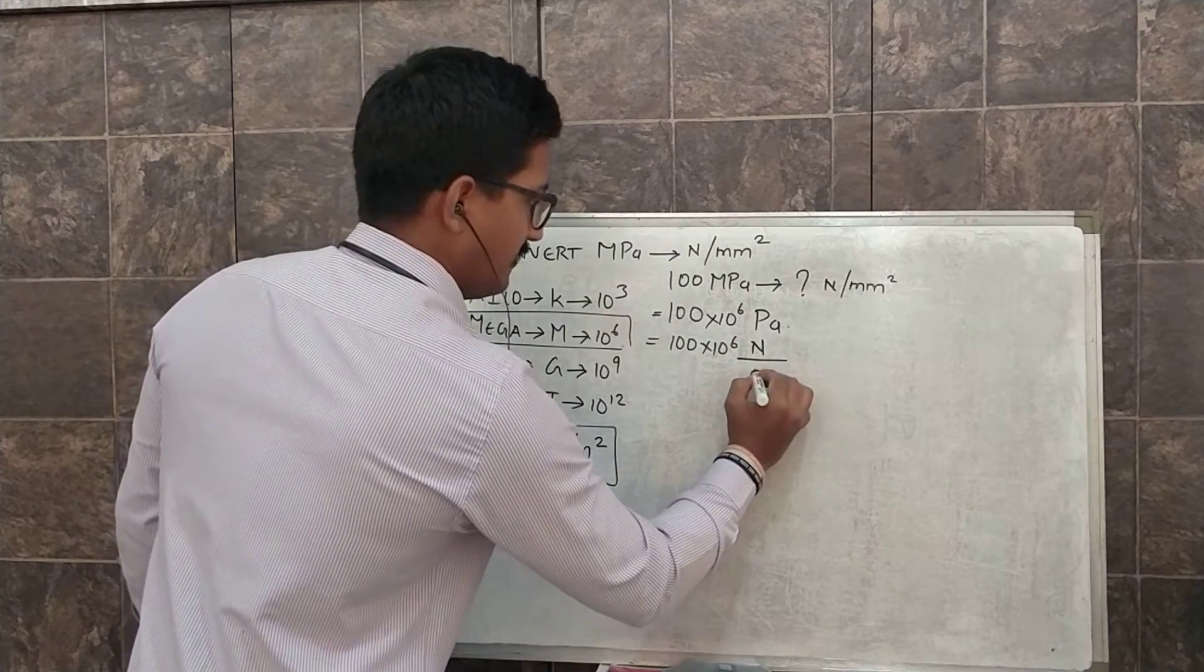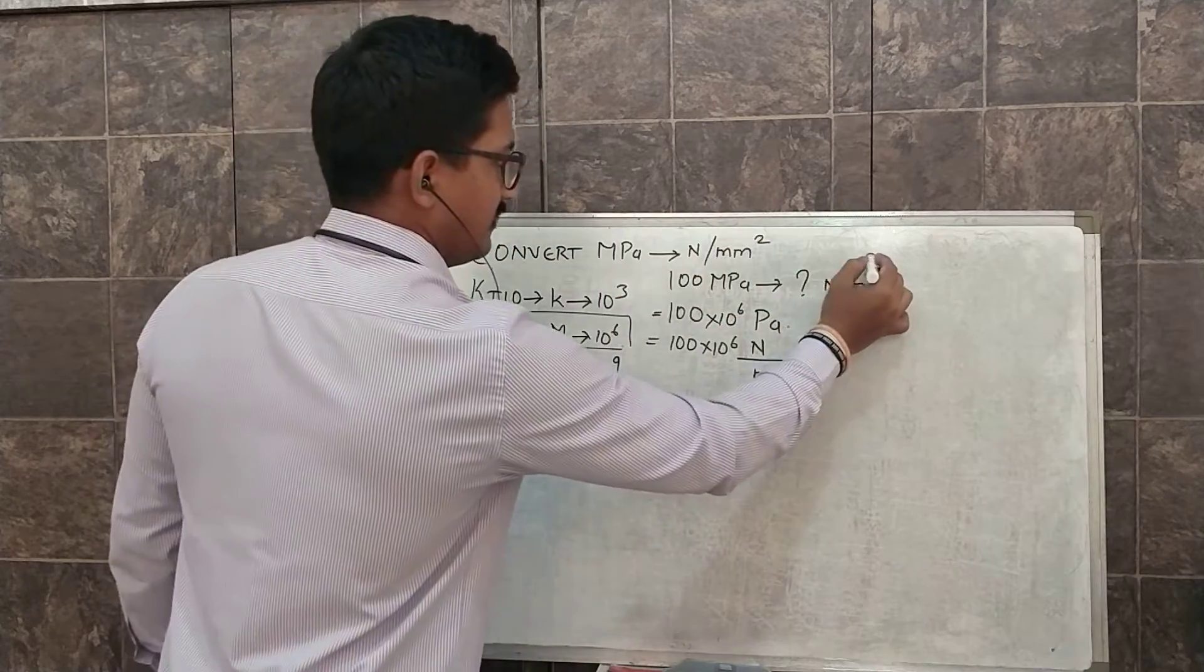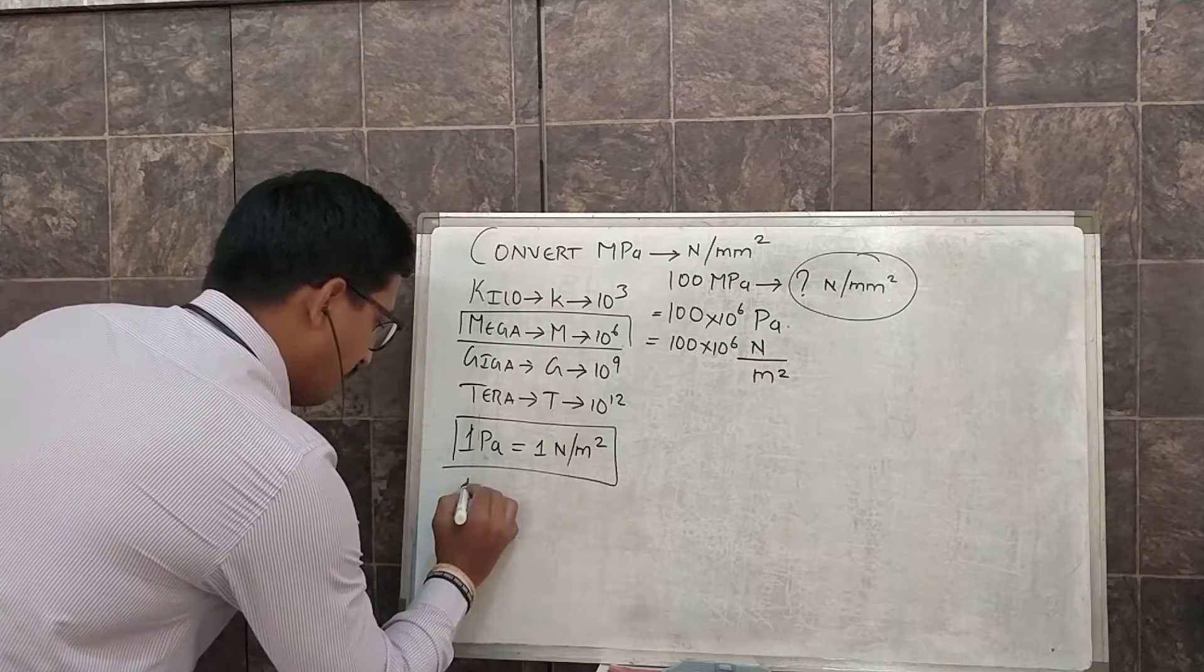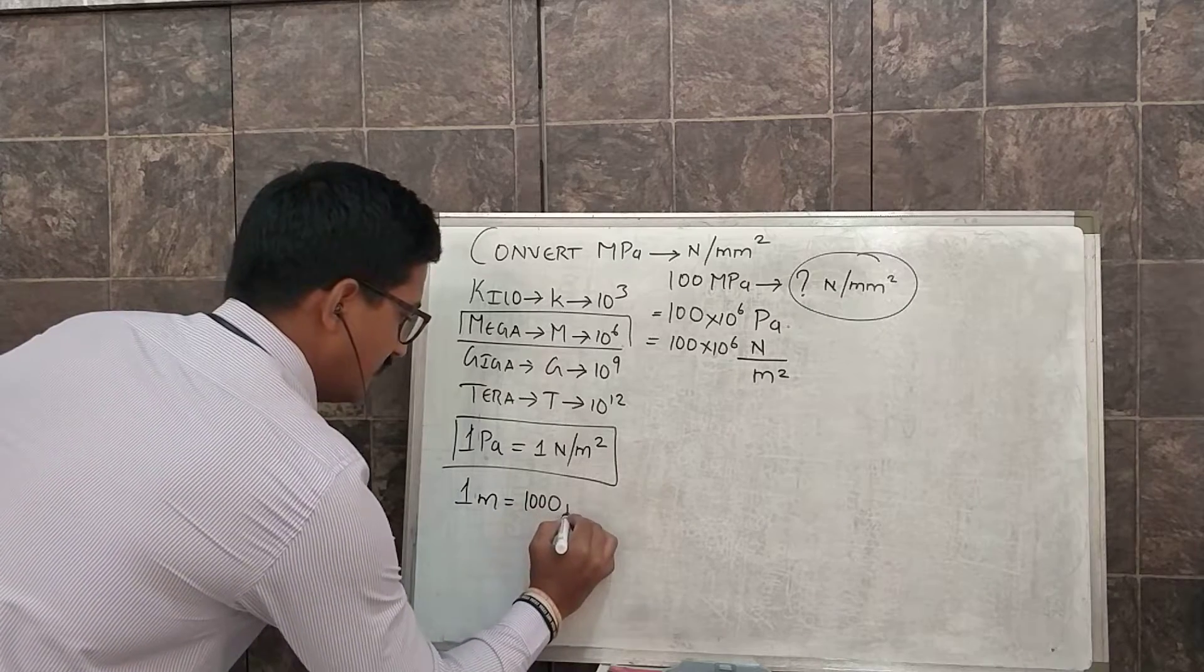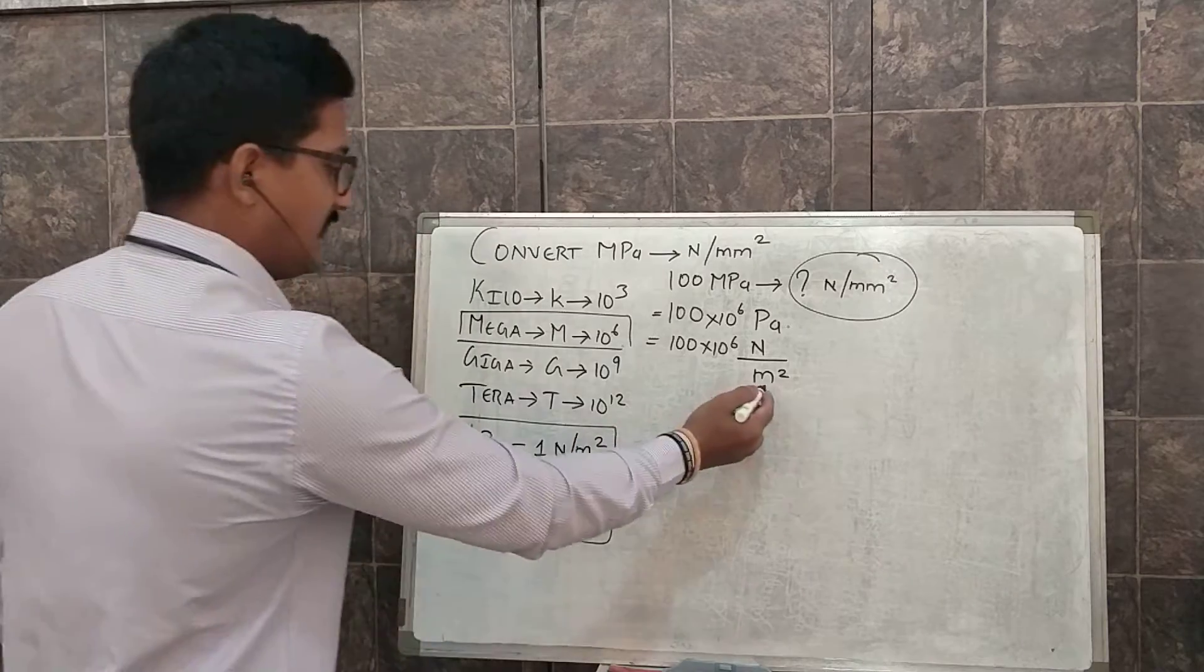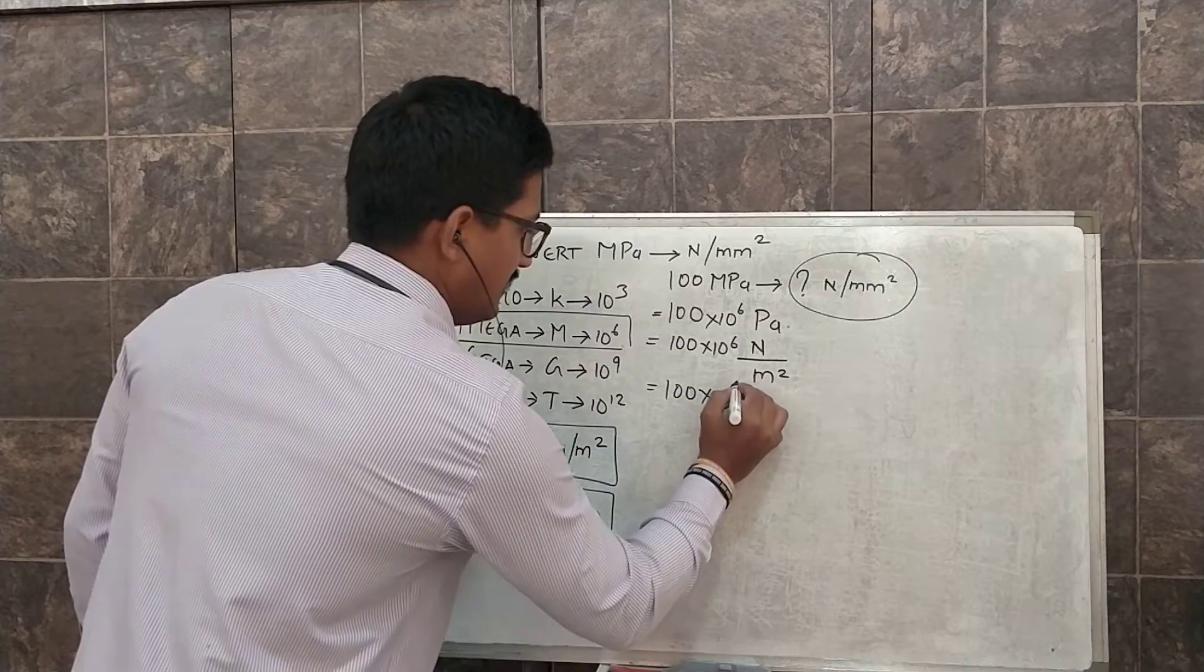So now we are getting close to our solution. Now again, 1 meter is equal to 1000 mm, so instead of meter I have to write mm. Which is equal to 100 into 10 raised to 6 Newton, this will be in mm.